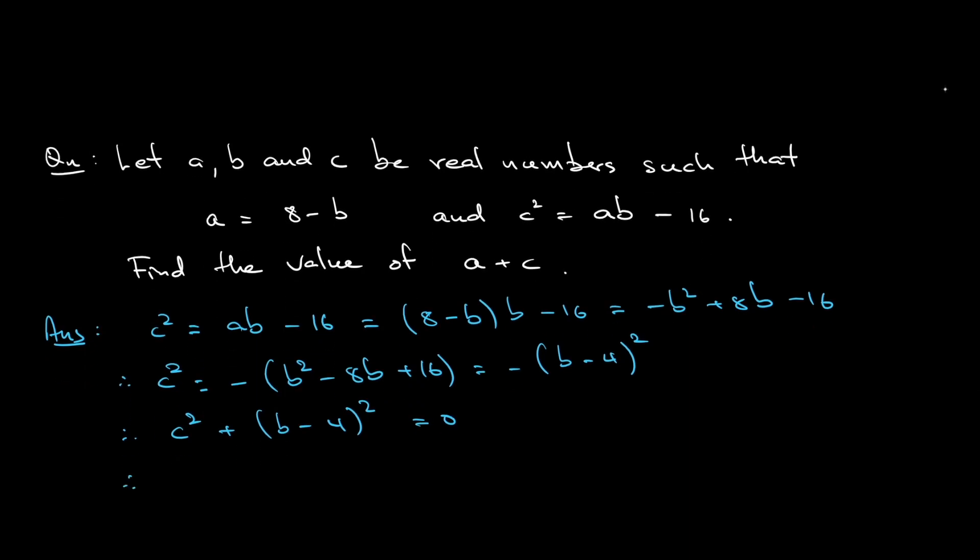We can infer from here that c is 0 and it is an and statement. b minus 4 is equal to 0. That means that b is equal to 4.